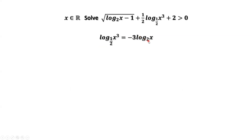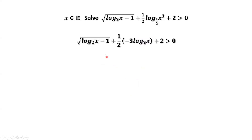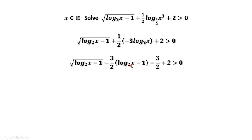Now we have the same base 2 for both log functions. We can replace this part by negative 3 times log of x to the base 2. We want to match this part to the inside part — we minus 1 here. Originally we don't have negative 1, but negative 1 times negative 3 halves equals positive 3 halves, so here we have to minus 3 halves.